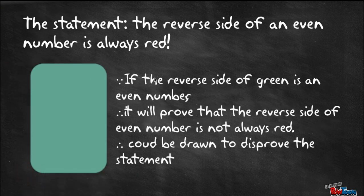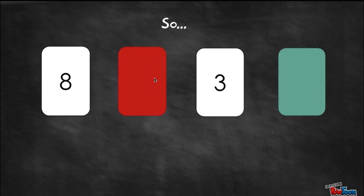However, if the reverse side of a green card is an even number, it will prove the reverse side of an even number is not always red. So we definitely need this green card to test our statement.